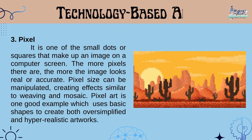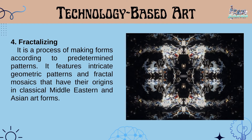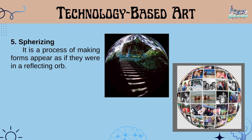Pixel art is one good example, which uses basic shapes to create both oversimplified and hyper-realistic artworks. Number 4, Fractalizing. It is a process of making forms according to predetermined patterns. It features intricate geometric patterns and fractal mosaics that have their origins in classical Middle Eastern and Asian art forms. Number 5, Spurizing. It is a process of making forms appear as if they were in a reflecting orb.